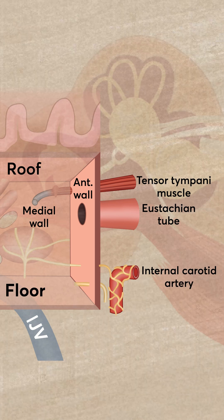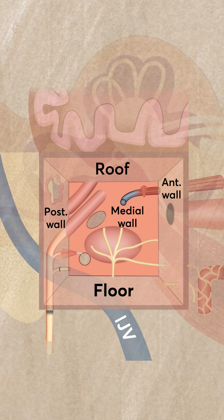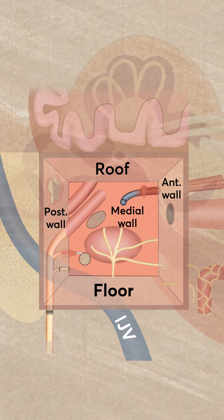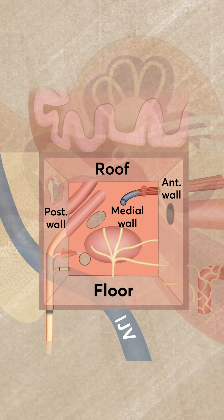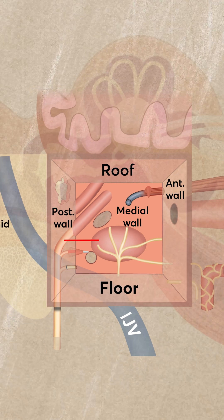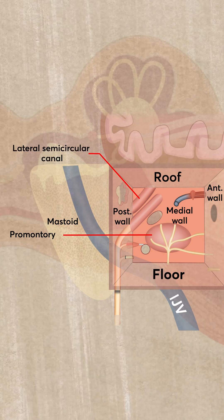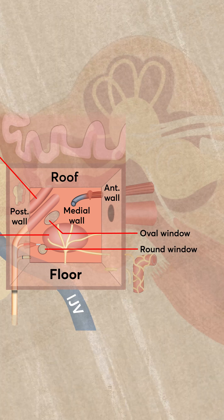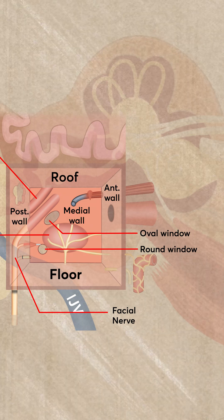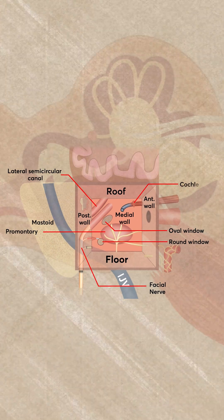Below the Eustachian tube you have got the internal carotid artery. The medial wall of the middle ear — you can remember the structures on the medial wall by this quick tip: two impressions, two windows, one nerve, and one projection. The two impressions: the first impression is formed by the basal turn of the cochlea, which we call the promontory; the second impression is formed by the lateral semicircular canal. We have two windows — the oval window above and the round window below. We have a nerve called the facial nerve going from the medial wall to the posterior wall, and a projection on the medial wall called the cochleariform process.